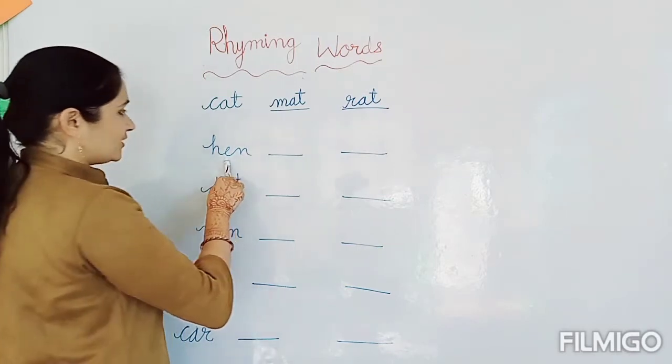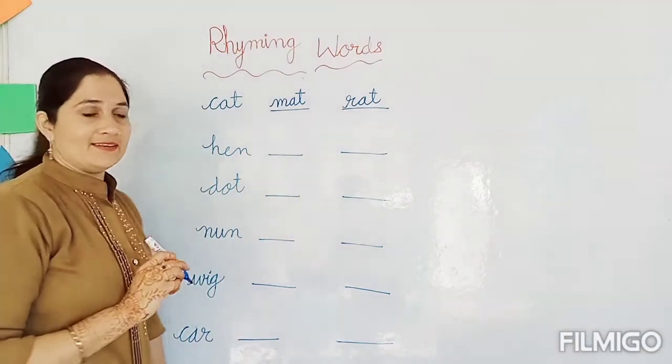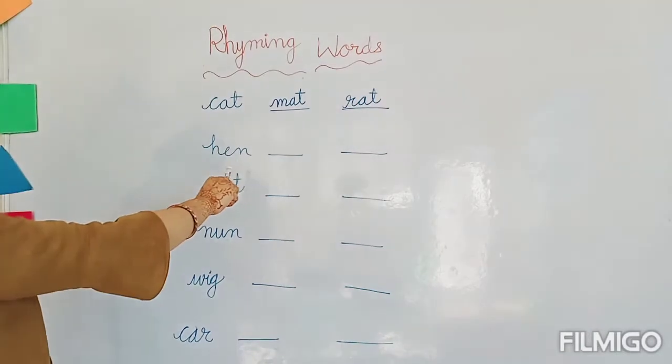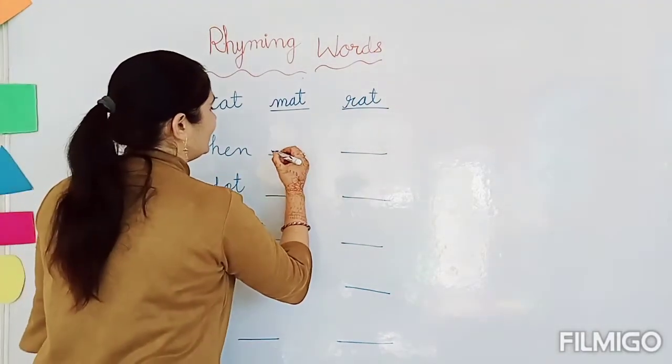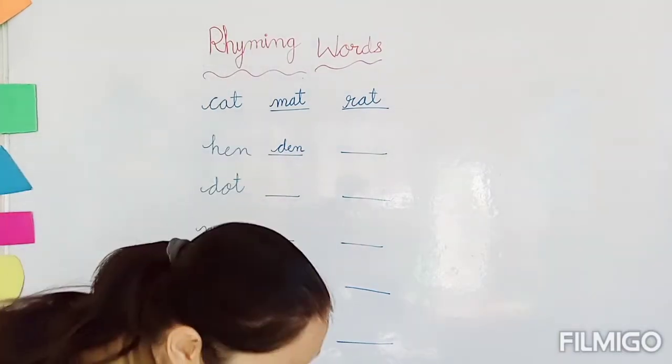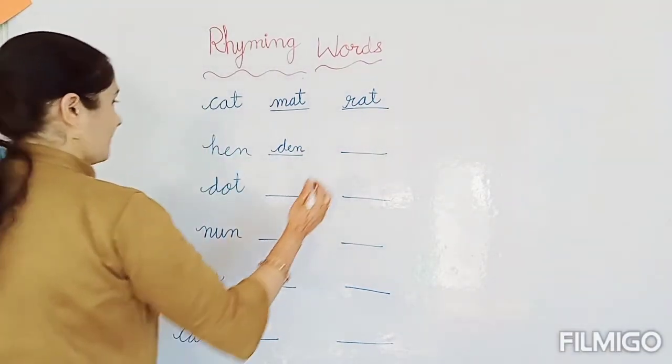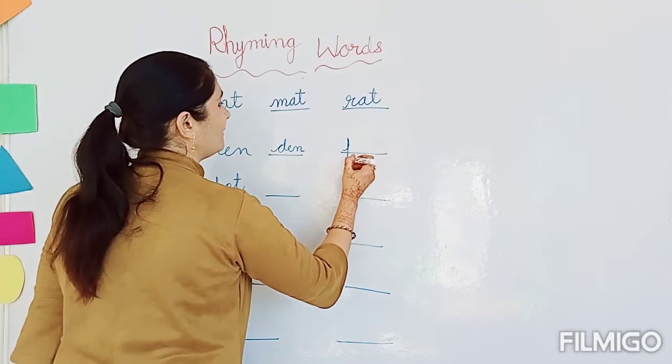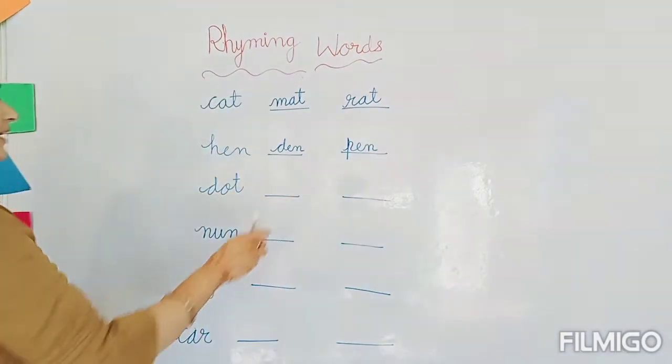Now, next word is hen. Hen. Now, similar sound we will find. Den. D-E-N. Den. Okay? And pen. P-E-N. Pen. Okay?